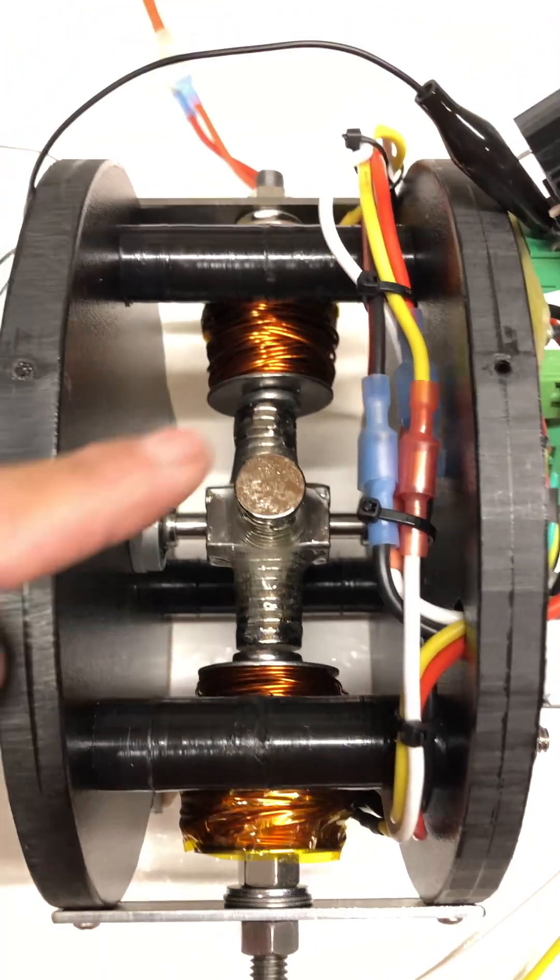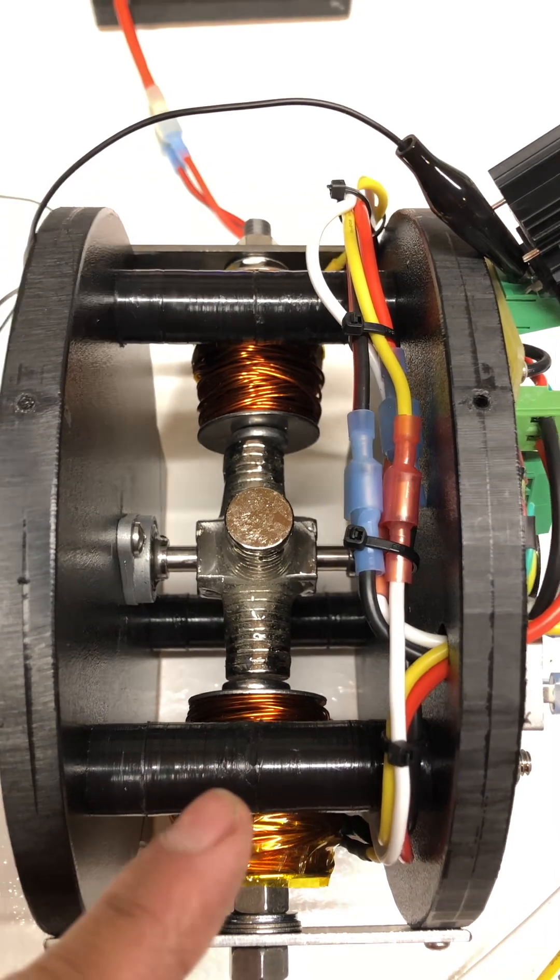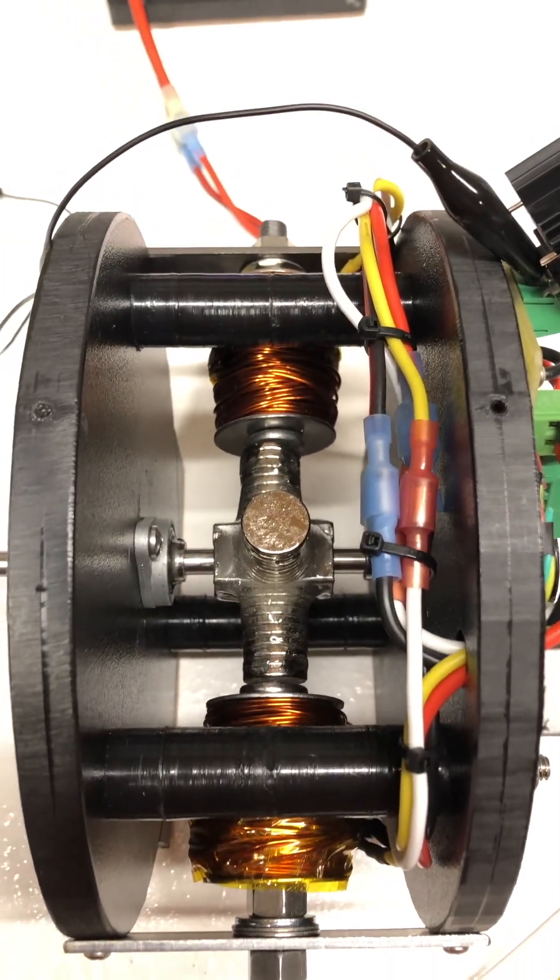Each coil, there's two of them right here, electromagnets here, are in the repulsion mode, as is with the Adams motor.